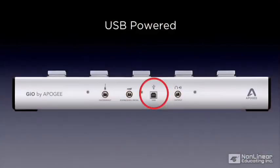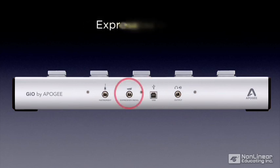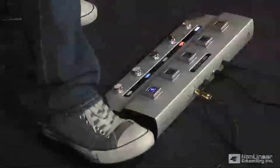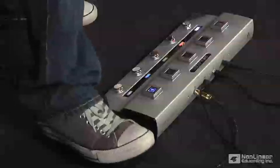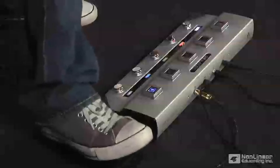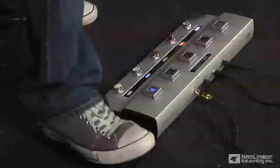GEO is fully powered by the USB connection to your Mac, eliminating the need for an external power source. Simply plug into an available USB port on any Mac and you're ready to go. GEO's expression control pedal input allows access to traditional effects like wah-wah and volume, and you can also control effects parameters like the length of a delay or the speed of a tremolo.